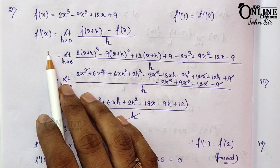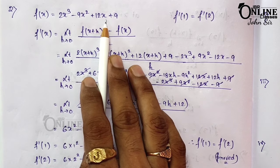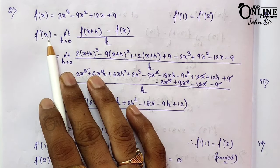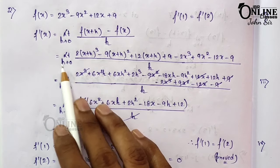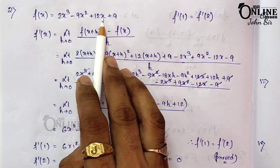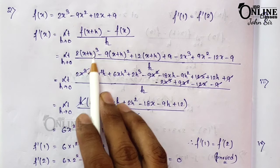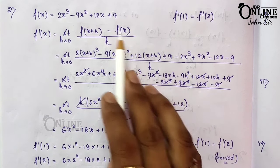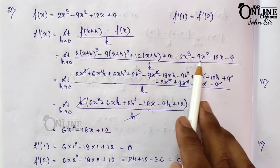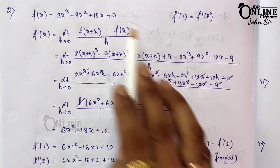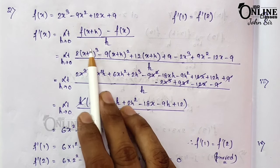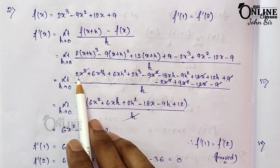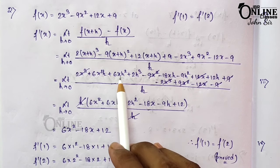Sum number 2: For the function f(x) = 2x³ - 9x² + 12x + 9, prove that f'(1) = f'(2). First find f'(x) by definition: limit h→0 of [2(x+h)³ - 9(x+h)² + 12(x+h) + 9 - (2x³ - 9x² + 12x + 9)] / h.